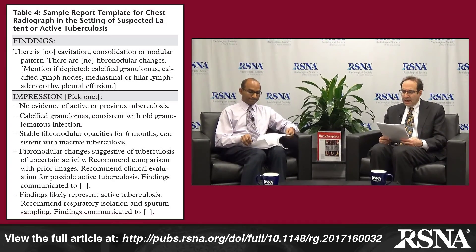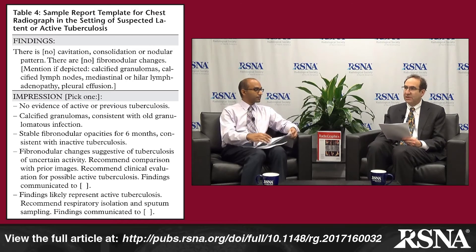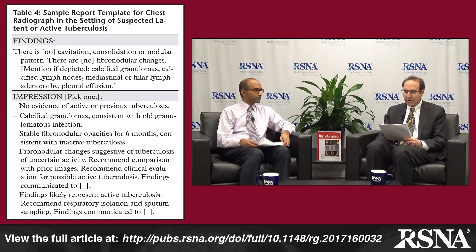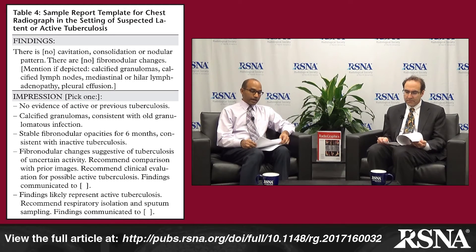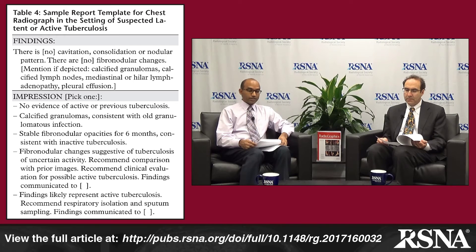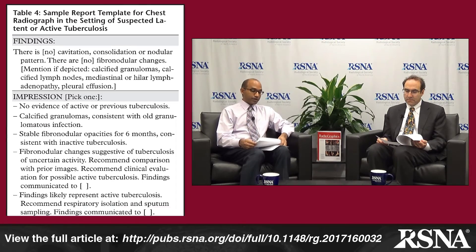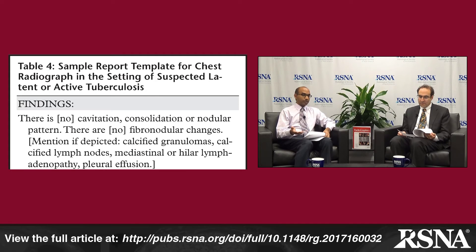Table 4 provides a sample report template for structured reporting of chest radiographs in patients with suspected latent or active tuberculosis. The findings and impression are the key components. When evaluating chest x-rays for tuberculosis — whether for employee health screening, patients on TNF-alpha inhibitor medications, or immunosuppressed patients — we should always mention whether there is or is not cavitation, consolidation, or a nodular pattern, as these can all be seen in active TB. We should also mention whether fibronodular changes are present, as that's a finding in inactive TB.